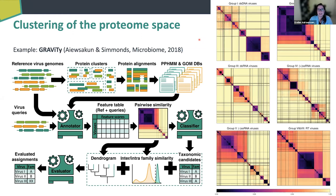One of the things that came out of this is that the creator of GRAViTy split his clustering, models, and HMMs into six different groups representing different Baltimore classes. This way he could get around the fact that some of these viruses really have nothing in common and have different evolutionary origins. In the sense of having one tool to rule them all, it would be better to have everything together, but splitting by Baltimore class makes it easier to process and interpret.